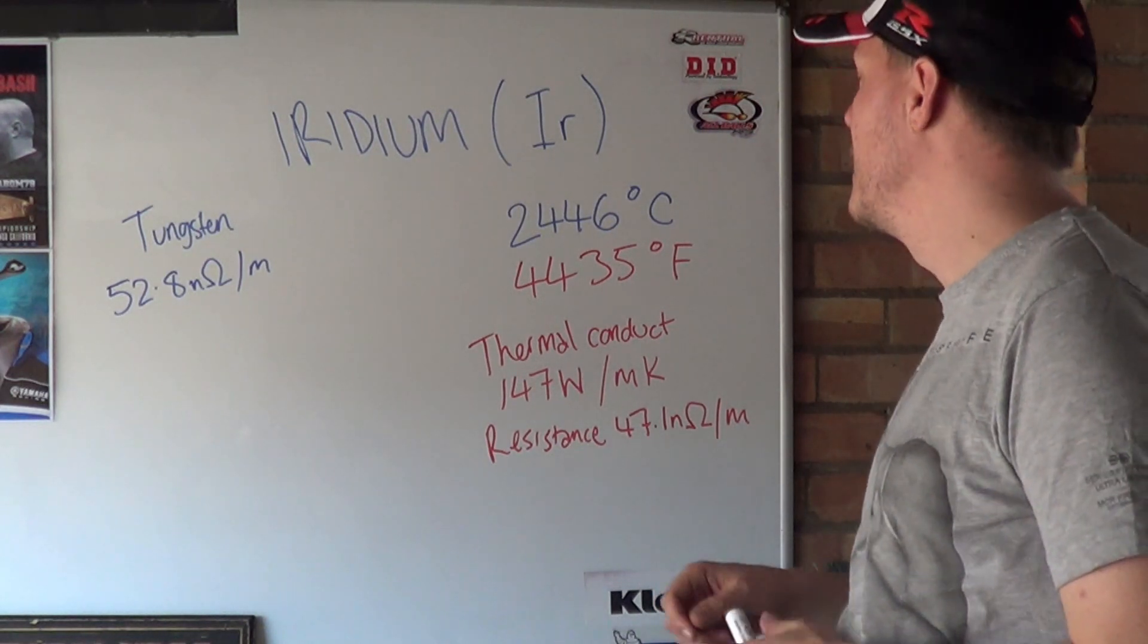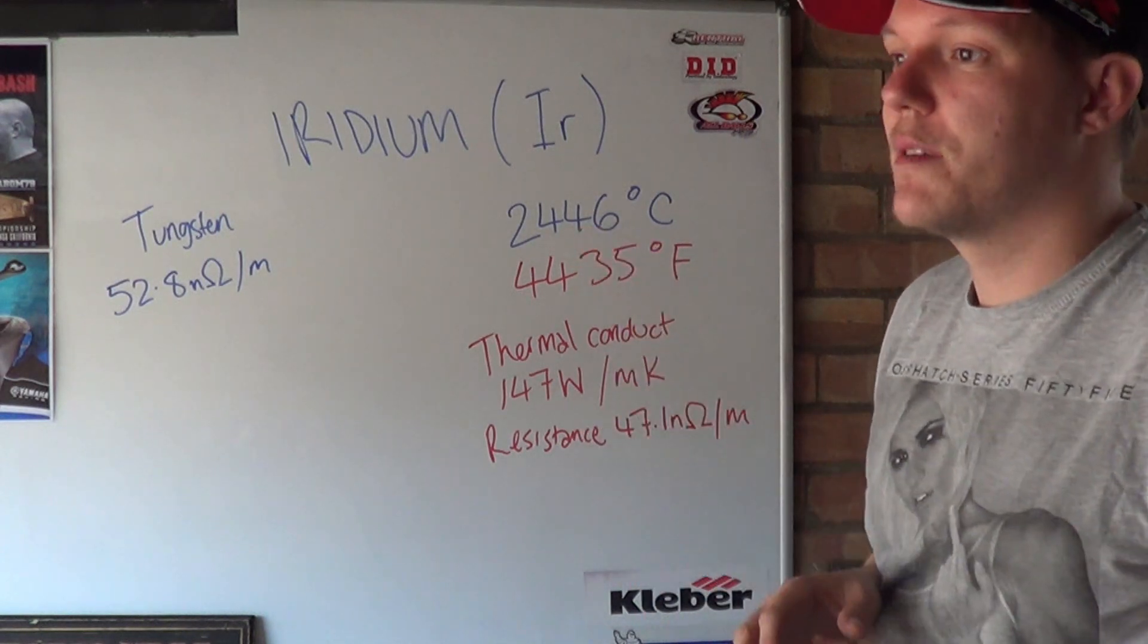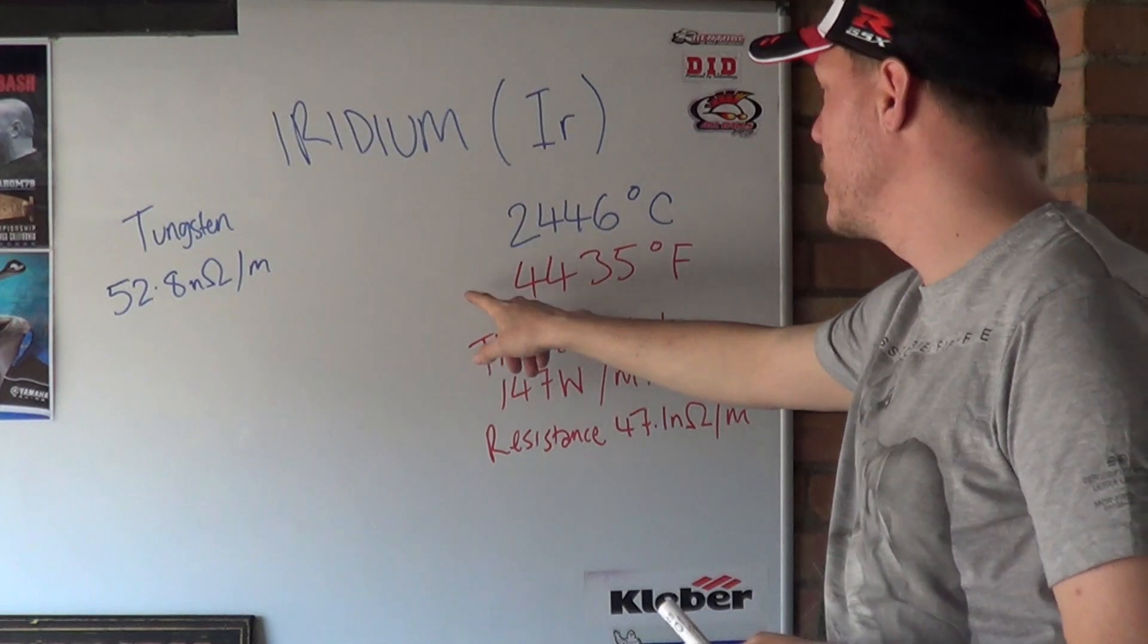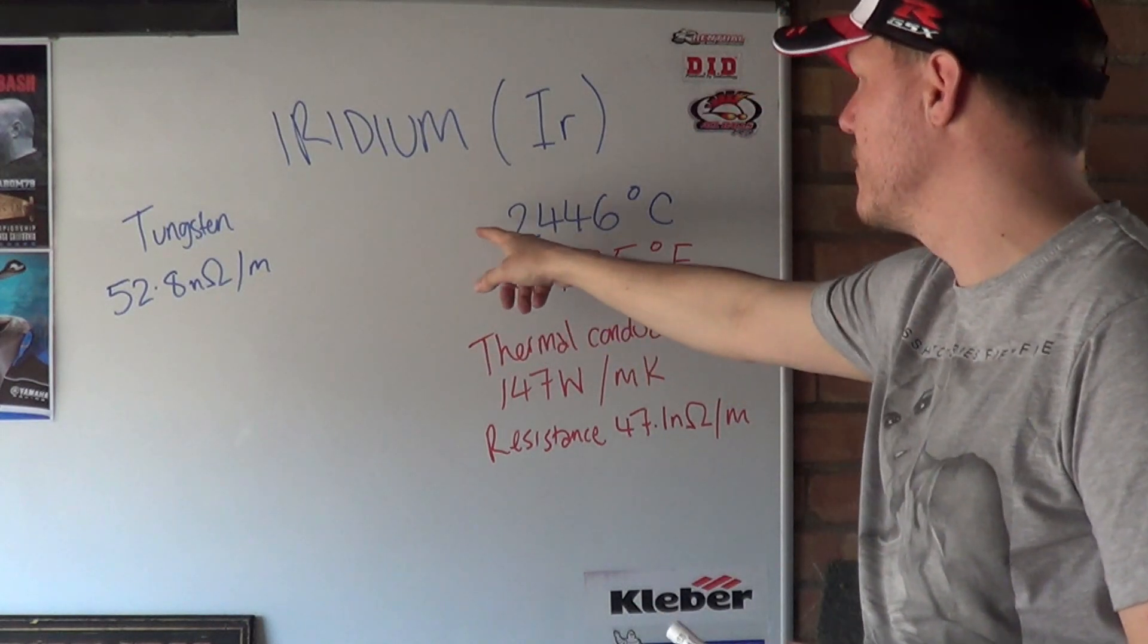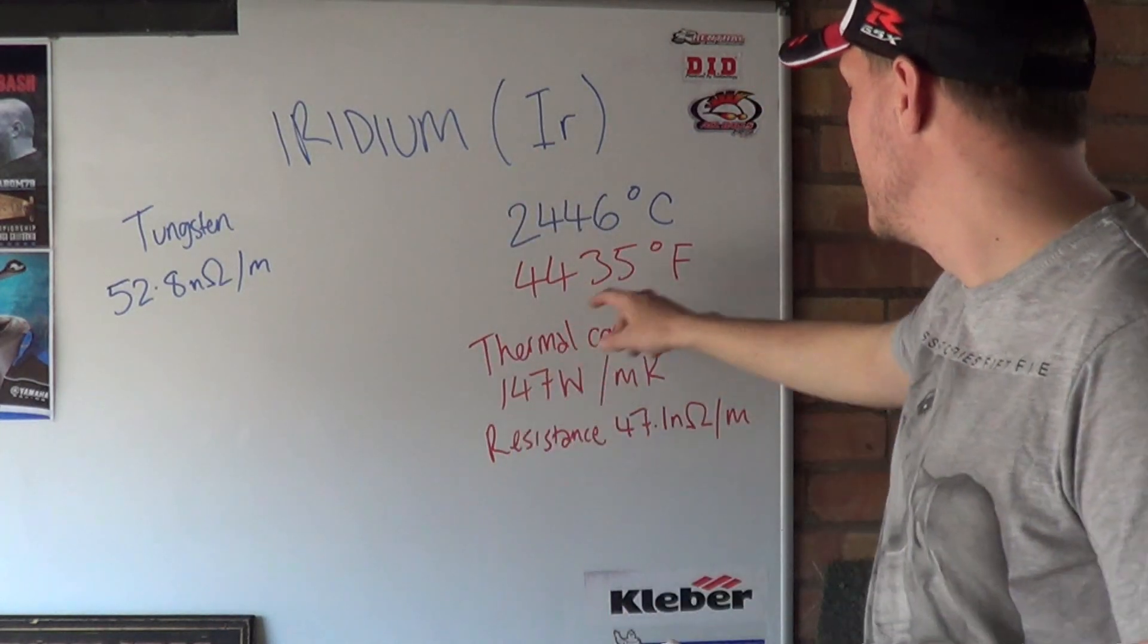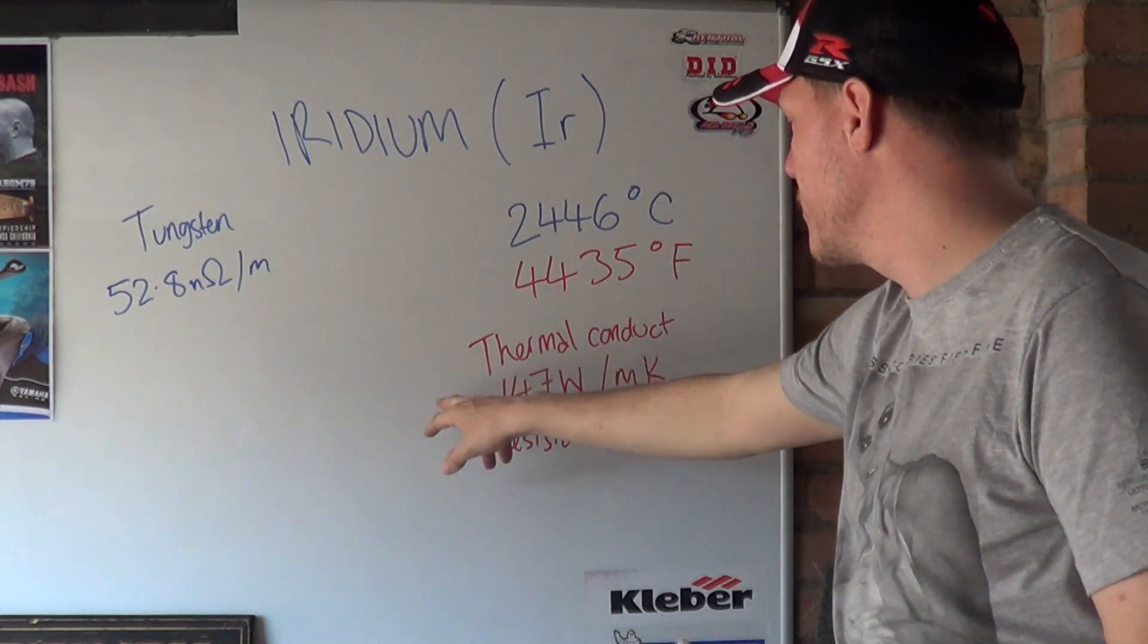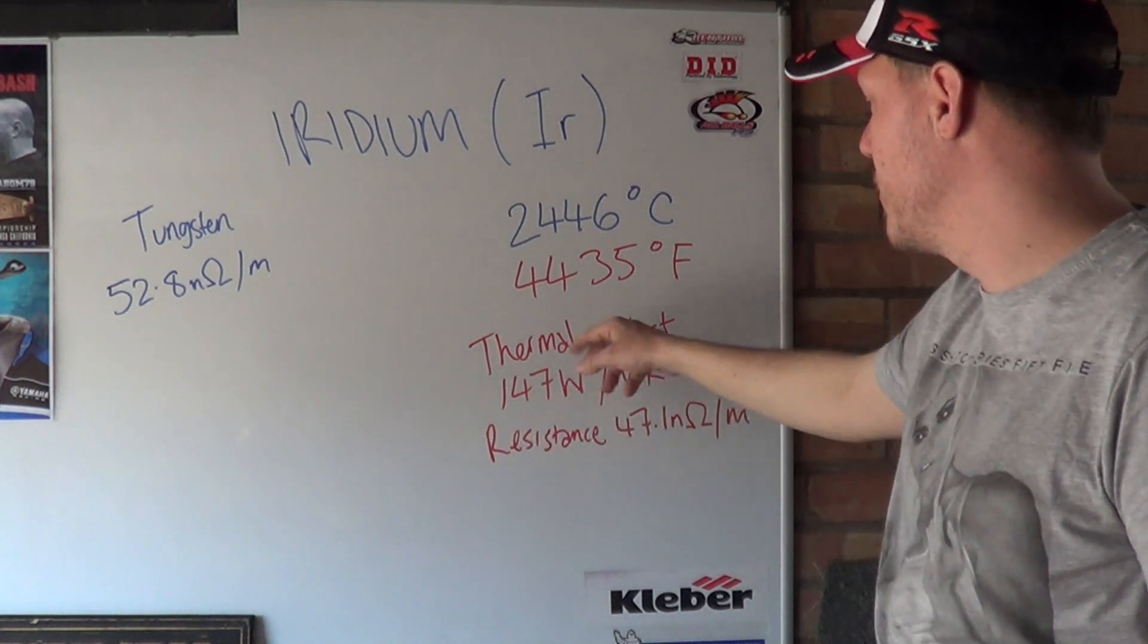One of the things about iridium is we've got some specs here. Its melting temperature is 2446 degrees Celsius, 4435 degrees Fahrenheit. Then we've got the thermal conductivity which is 147 watts per meter kelvin, and then resistance. It's the resistance bit that's important.